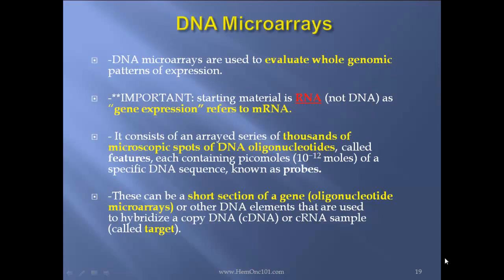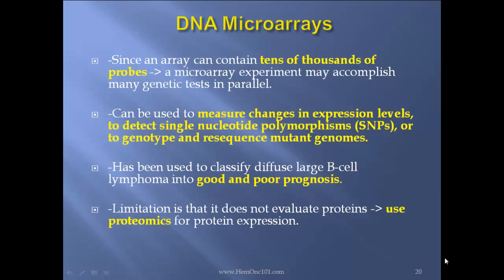DNA microarrays are used to evaluate whole genomic patterns of expression. The most important thing to know: the starting material is RNA, not DNA — please remember this — as gene expression refers to mRNA. It consists of an array series of thousands of microscopic spots of DNA oligonucleotides called features, each containing picomoles of a specific DNA sequence known as probes — either a short section of a gene in oligonucleotide microarrays, or other DNA elements used to hybridize cDNA or cRNA, called the target. Since an array can contain tens of thousands of probes, a microarray experiment may accomplish many genetic tests in parallel. It can measure changes in expression levels, detect SNPs, or genotype and resequence mutant genomes. This has been used to classify diffuse large B-cell lymphoma into good and poor prognosis. The limitation is that it does not evaluate proteins — use proteomics for protein expression.